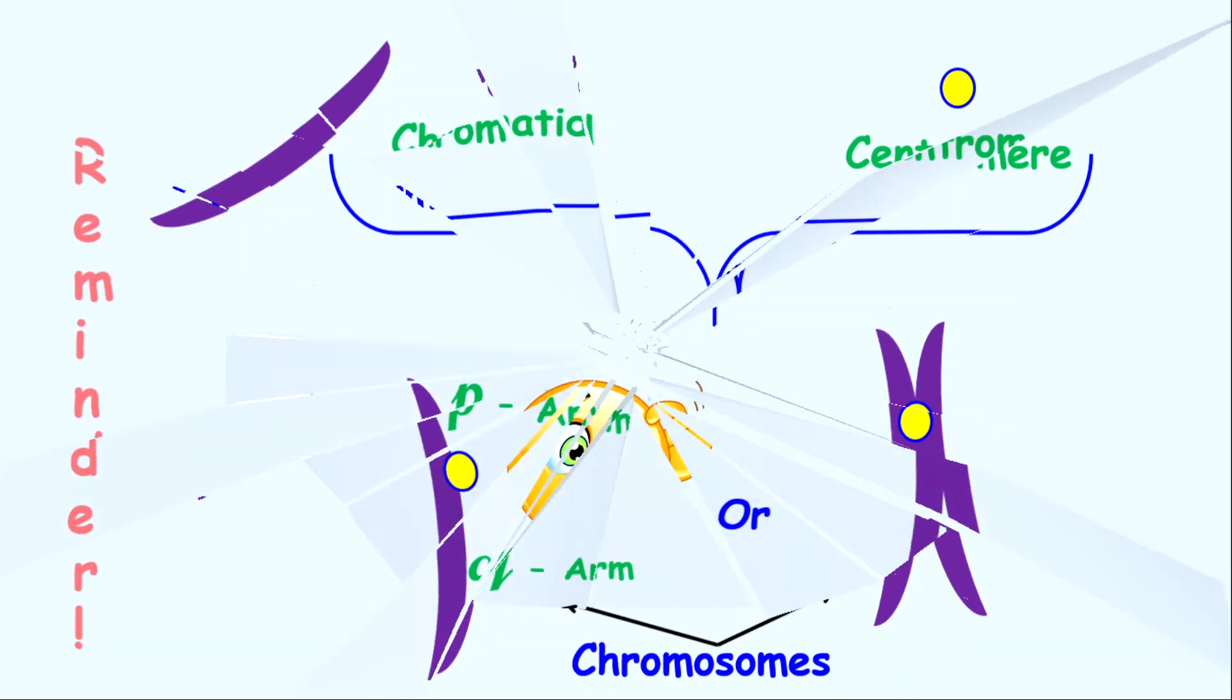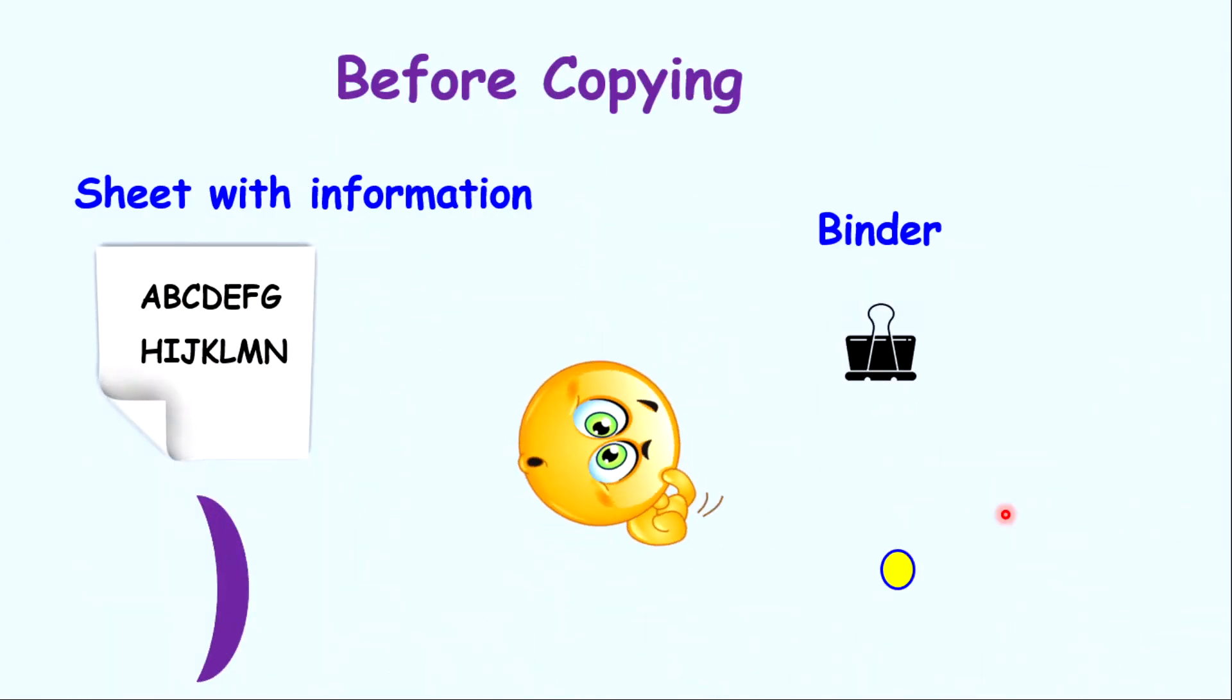Let's put this into perspective. Now what I want you to consider to make this very easy for you is think about a chromatid being a sheet of paper with information. What information does a chromatid contain is simply genetic information. So it's the information section of the chromosome.